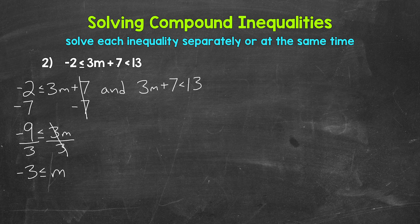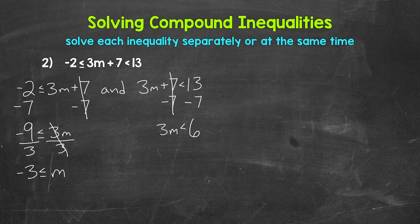Now we solve 3m plus 7 is less than 13. We undo the addition by subtracting 7 from both sides — the 7s cancel, giving us 3m is less than 13 minus 7, which is 6. So 3m is less than 6. We undo the multiplication by dividing both sides by 3 — the 3s cancel, so m is isolated. We get m is less than 6 divided by 3, which is 2. So m is less than 2.